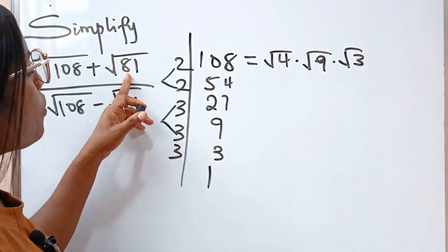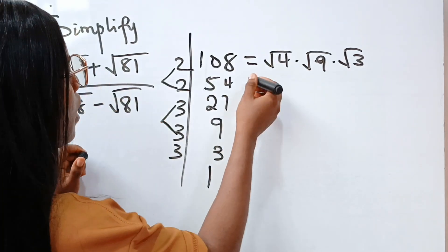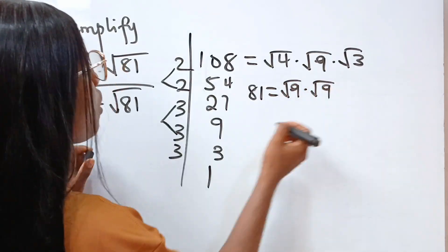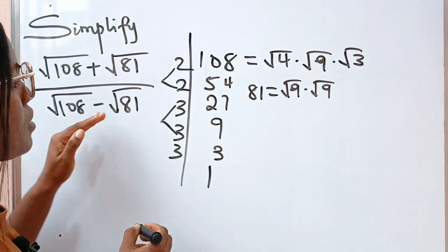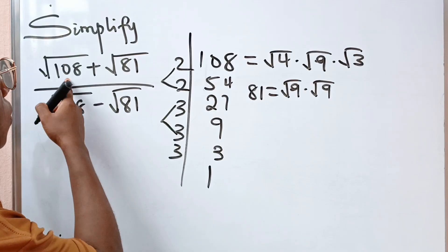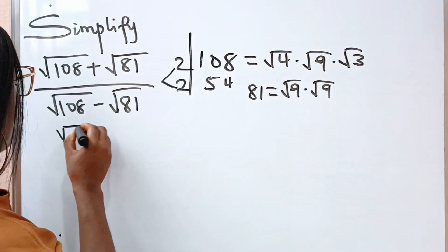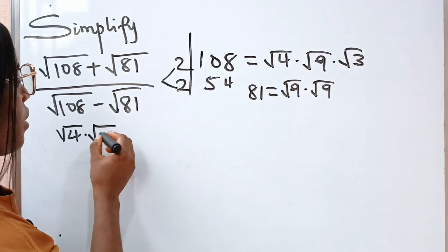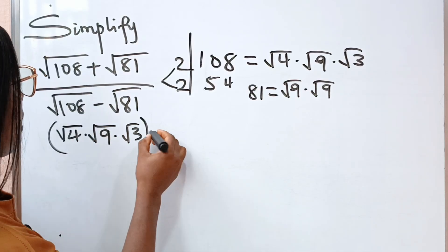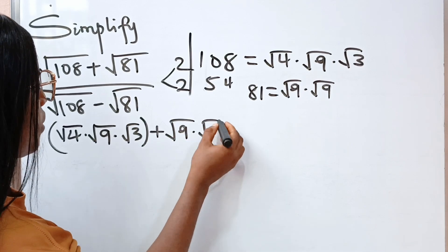Similarly, root 81 is easy. 81 is 9 multiplied by 9, so we can write 81 as root 9 multiplied by root 9. Let's go back and write it like that. We are going to replace root 108 with: root 4 multiplied by root 9 multiplied by root 3. Plus this one will be root 9 multiplied by root 9.